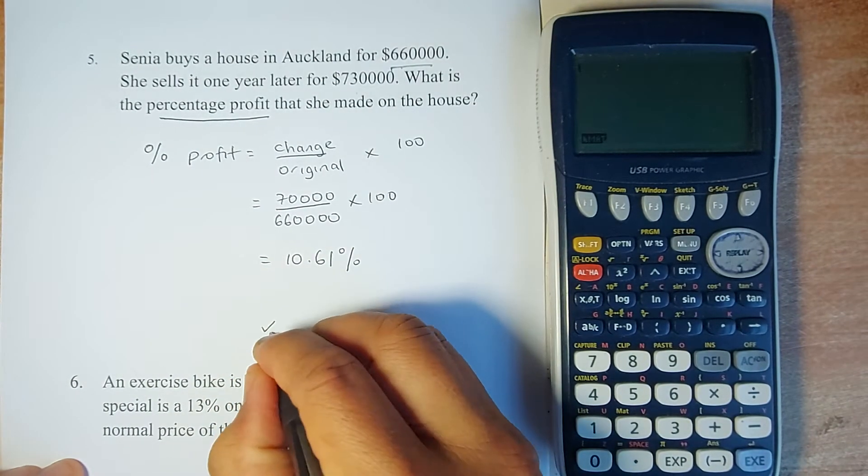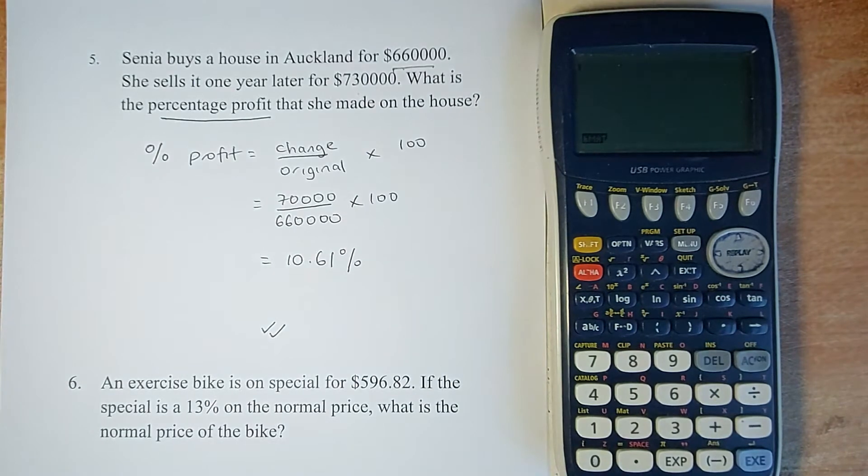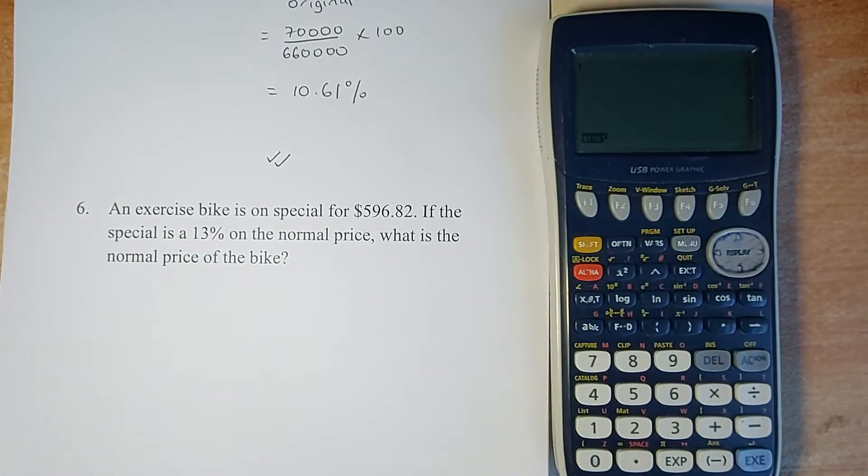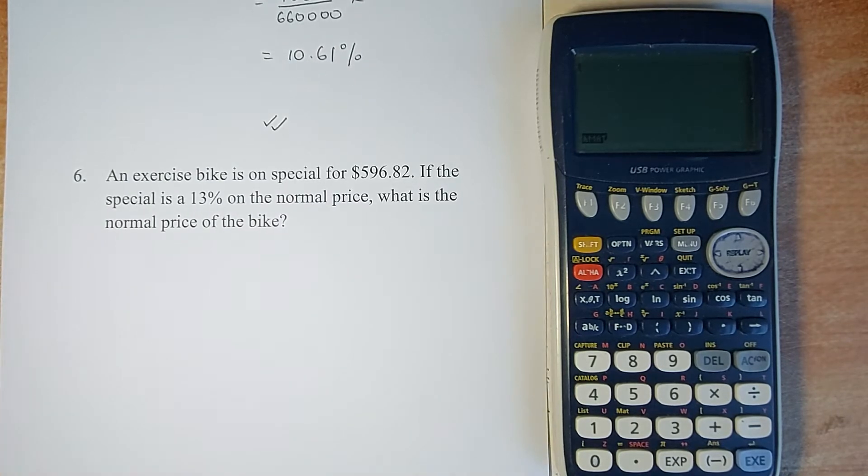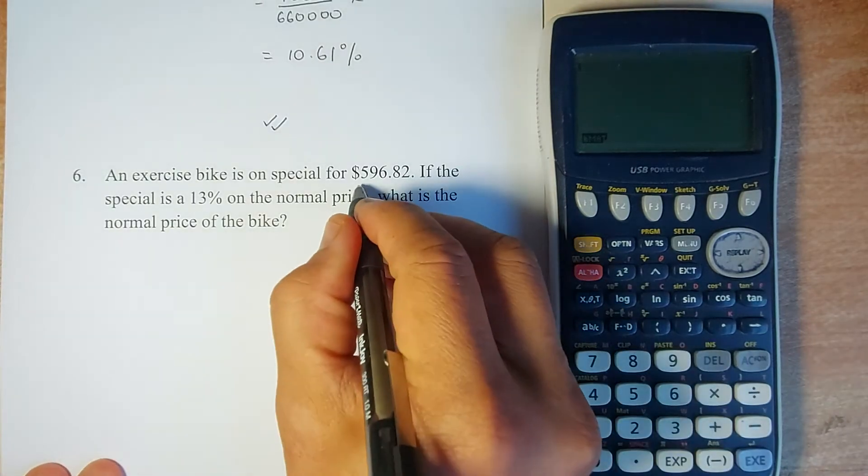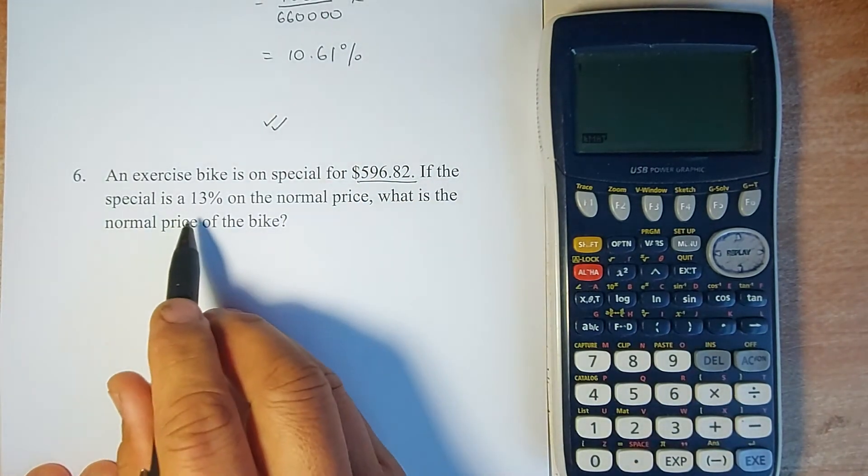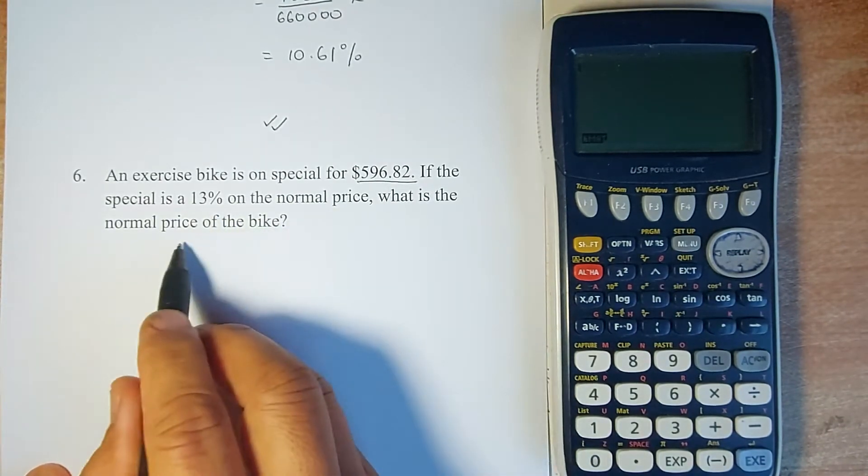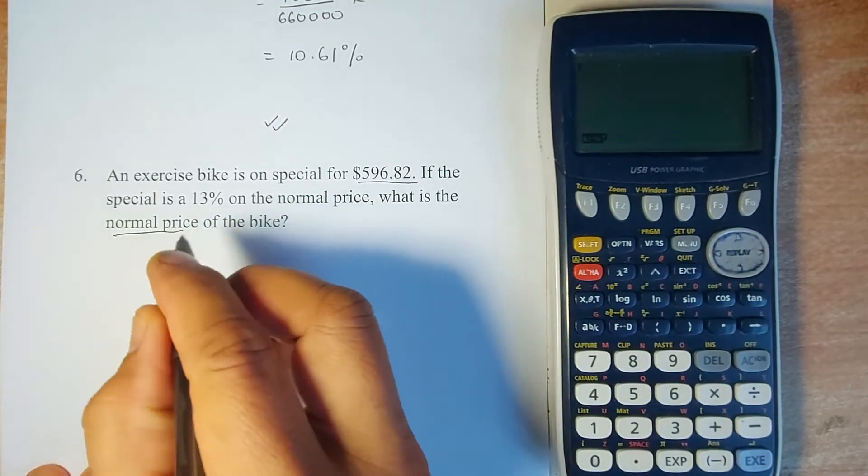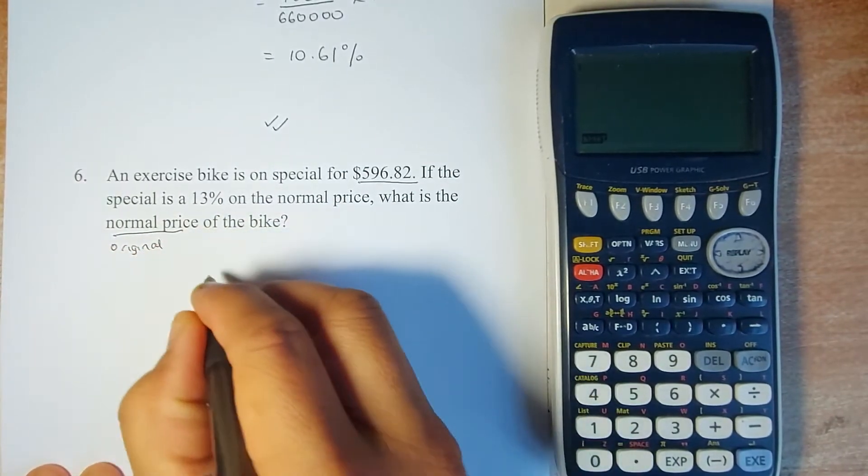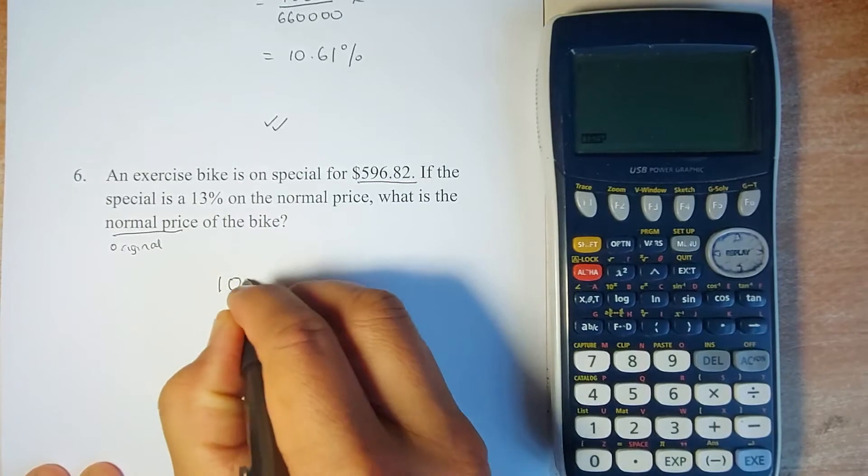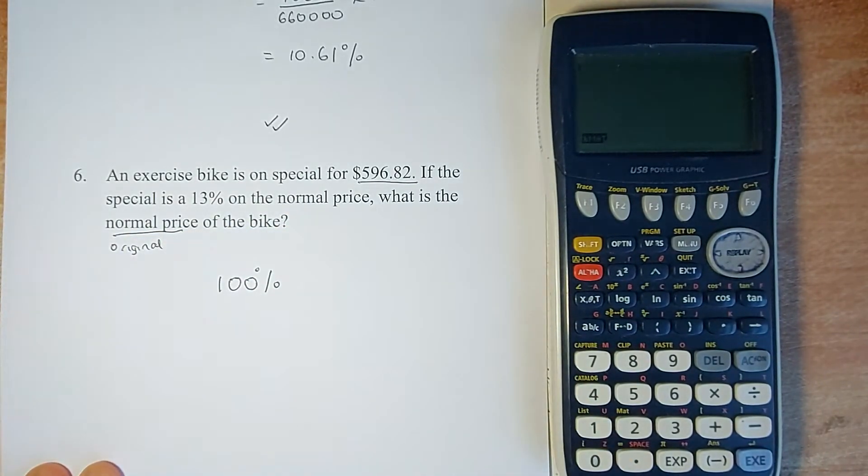Next question: an exercise bike is on special for $596.82. If the special is 13% off the normal price, what is the normal price? If the question asks for the normal price or original price, they are looking for 100%. Remember that normal and original mean they are looking for 100%.